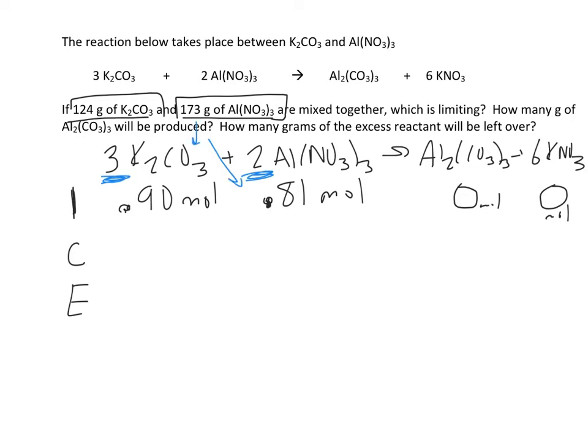So you're going to guess. Let's say we guess the aluminum is going to run out first. So on the change line, you're going to write minus all of it. We're assuming it's all going to be gone. So we say, okay, if all of that's gone, how much of the K2CO3 is going to go with it?